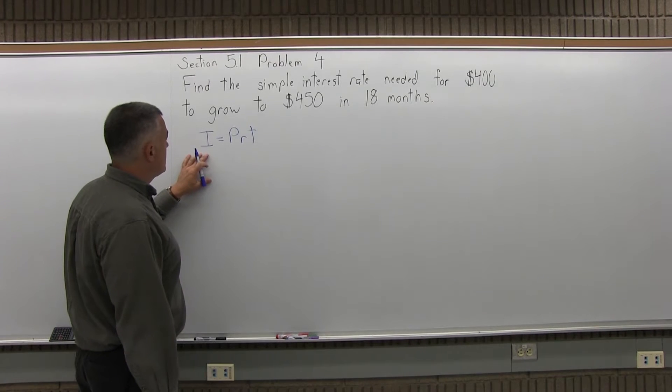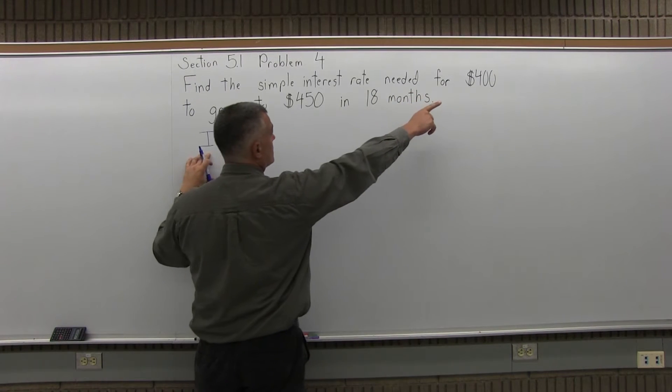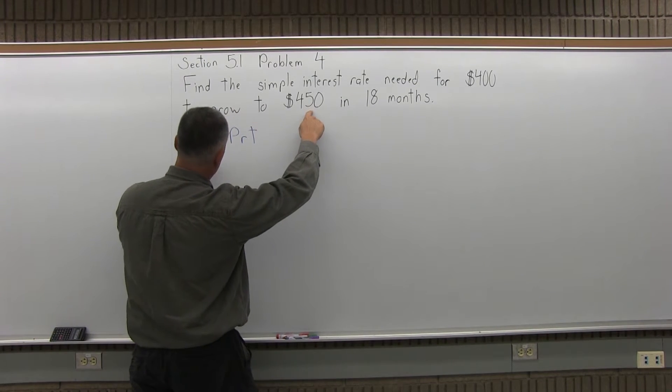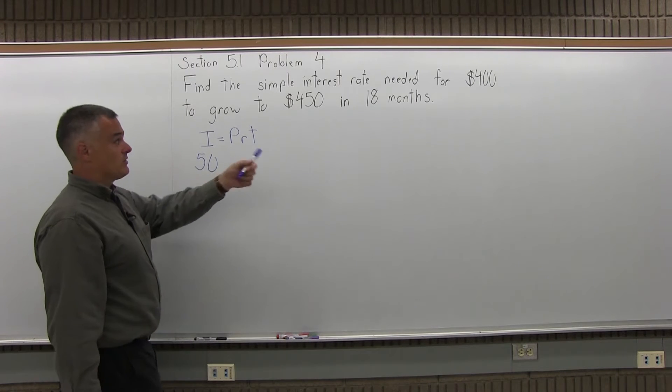Now as I fill this in, I is the interest earned. For $400 to grow to $450 you must have had $50 of interest, right? That's how much interest you would need to make $400 grow to $450.